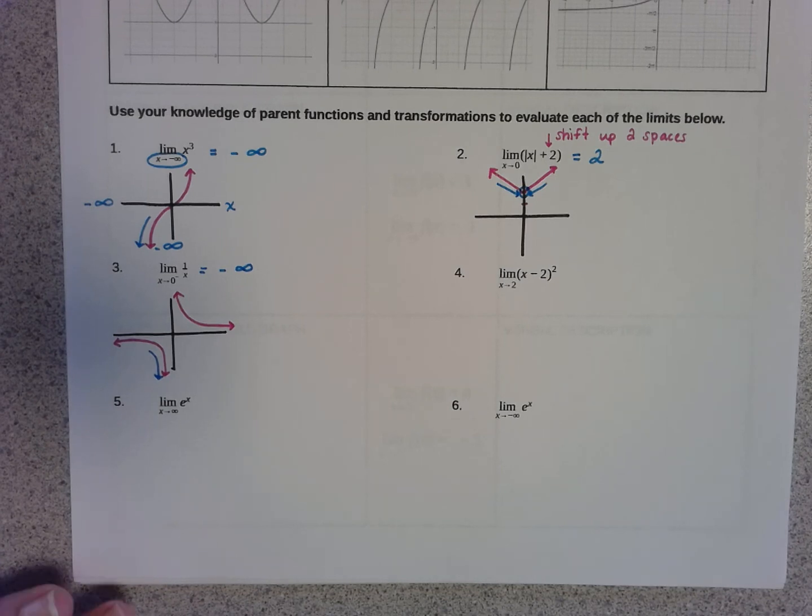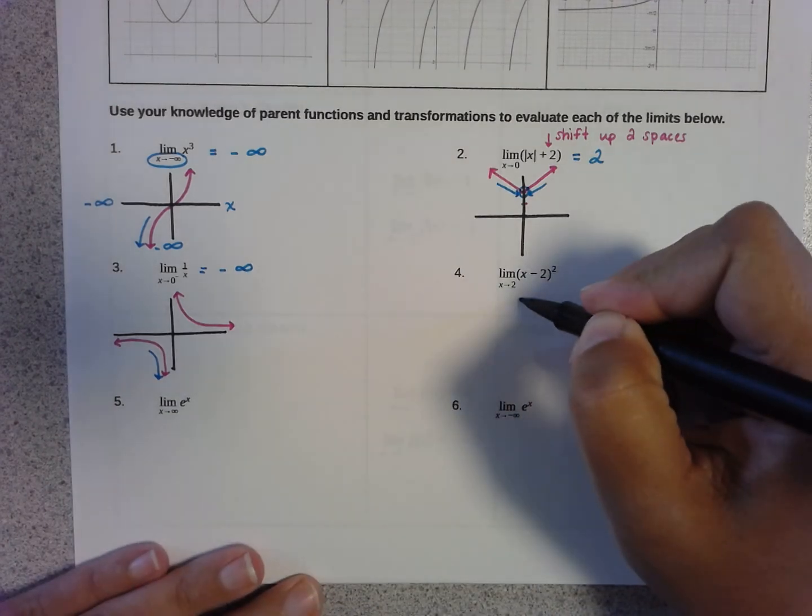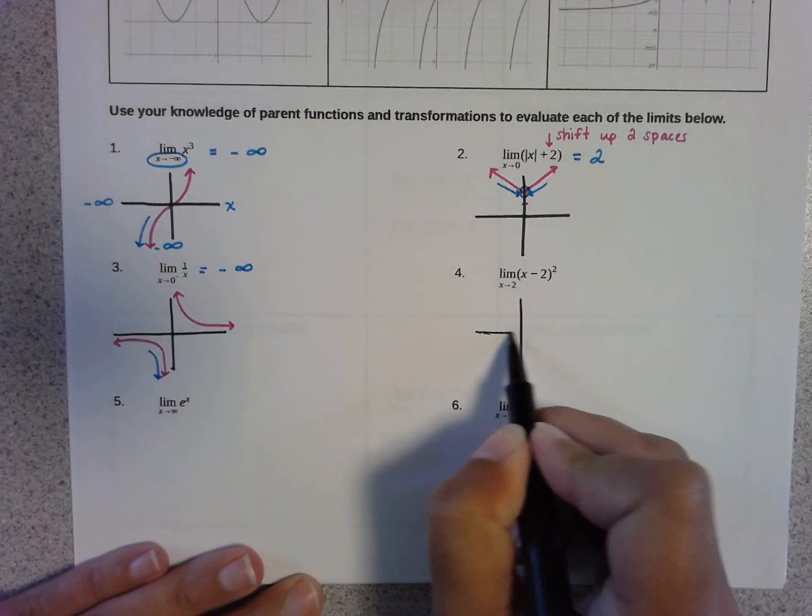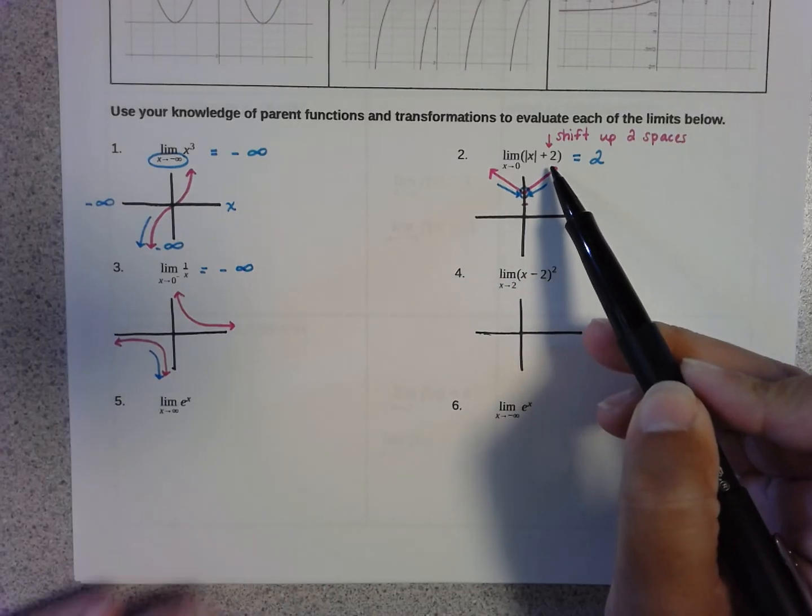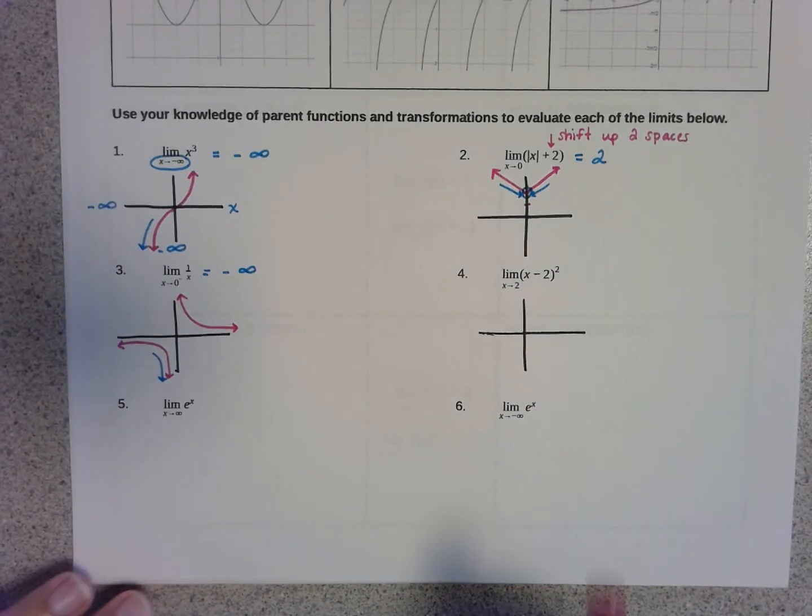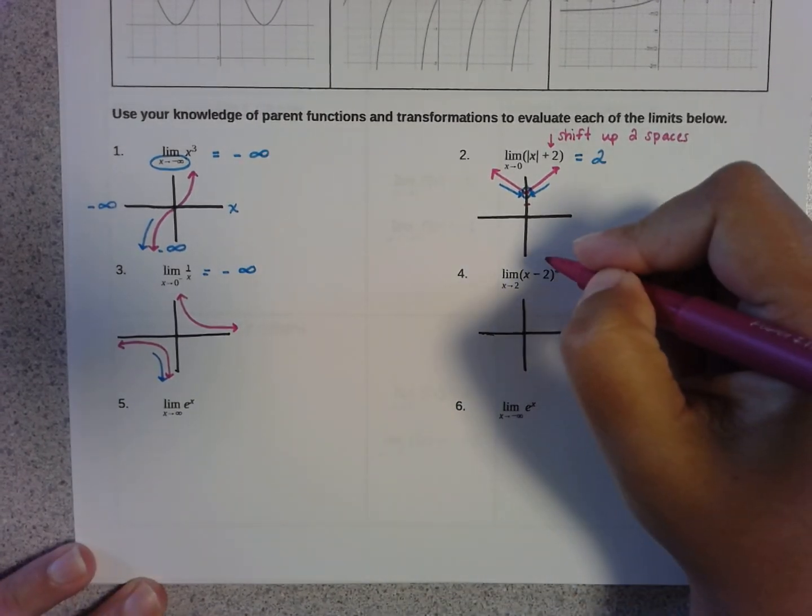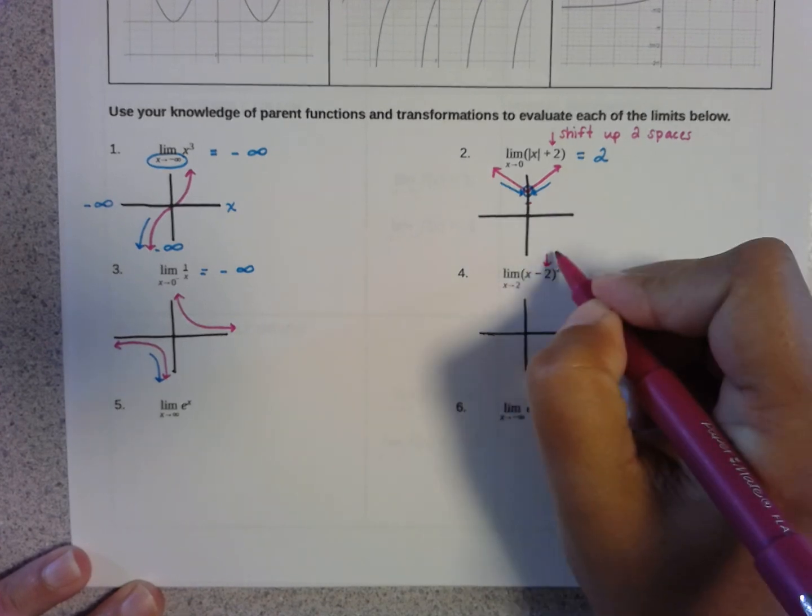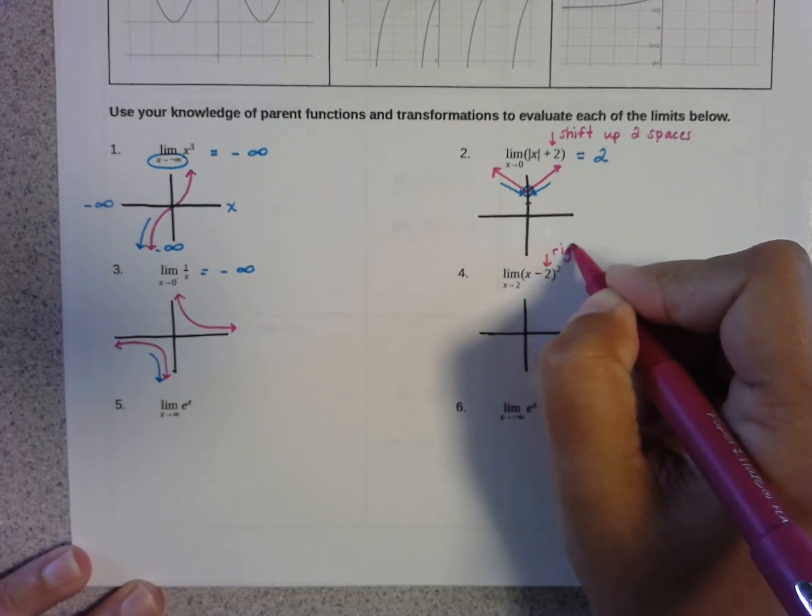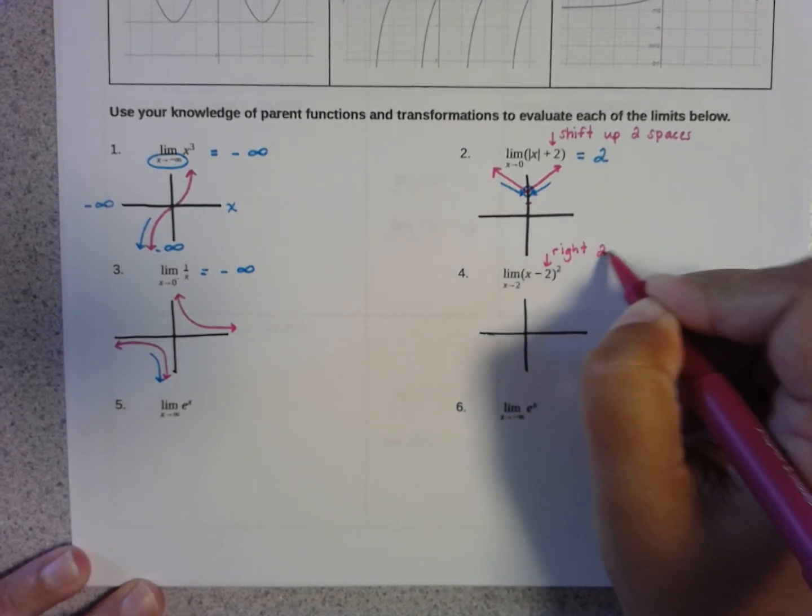For problem number four, it's the graph of the limit as x approaches 2 of x minus 2 squared. So what I know is that unlike this problem where the plus 2 shifted me up two places, if this shift is inside of the parentheses by the x, it's going to take my x squared function and shift it to the right two spaces.